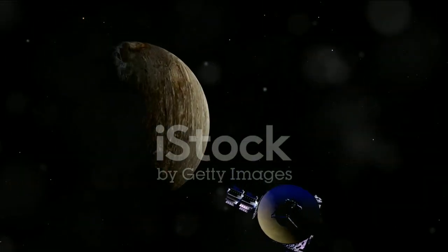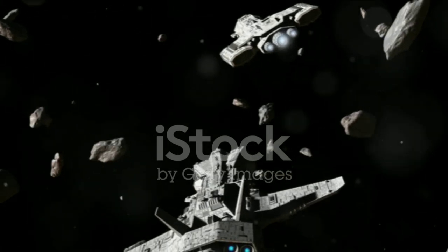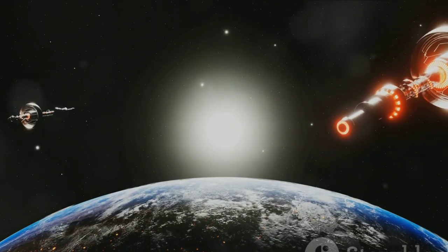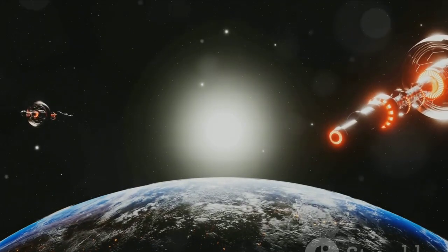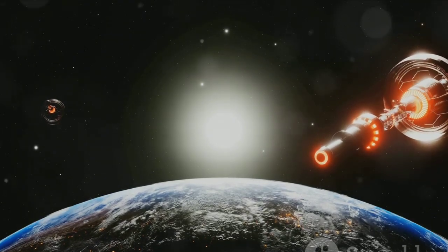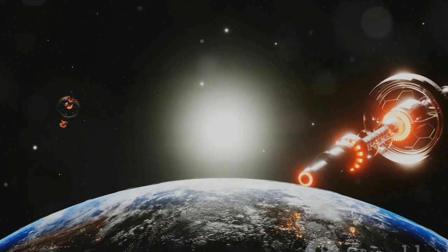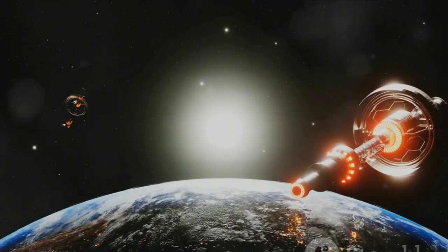Voyager 1 continues to send data back to us, its messages taking over 19 hours to reach Earth. Then there's New Horizons, a young wanderer compared to Voyager. It flew by Pluto in 2015, giving us the first close-up images of this distant dwarf planet. It's now on an extended mission in the Kuiper Belt, a region of space beyond the orbit of Neptune filled with icy bodies and remnants from the solar system's formation.